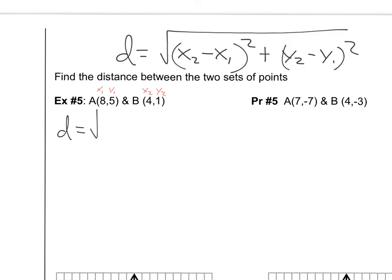So d equals the square root of my x2 is 4 minus my x1, 8 squared, plus my y2, 1, minus my y1, 5, squared. Okay.